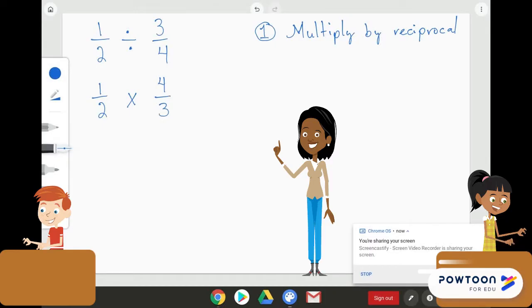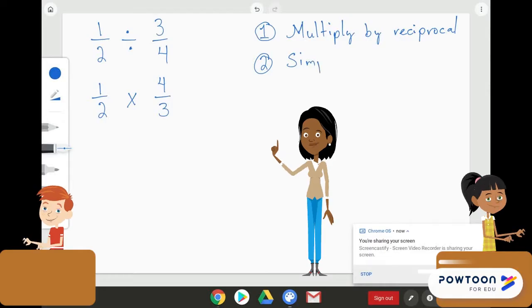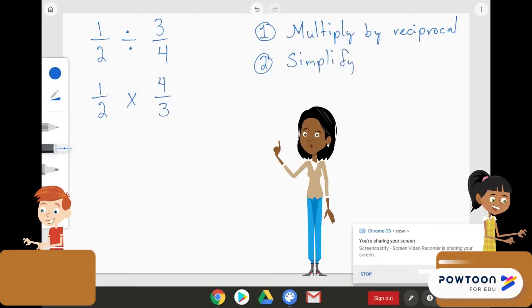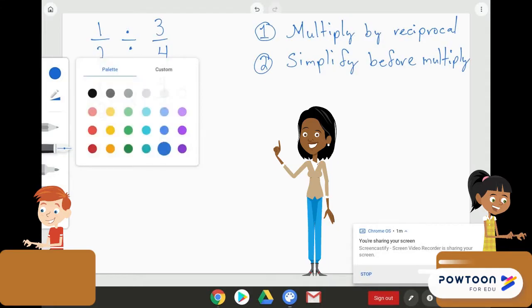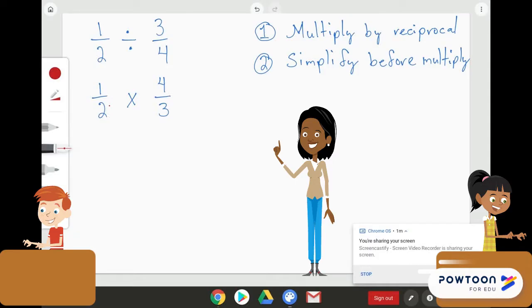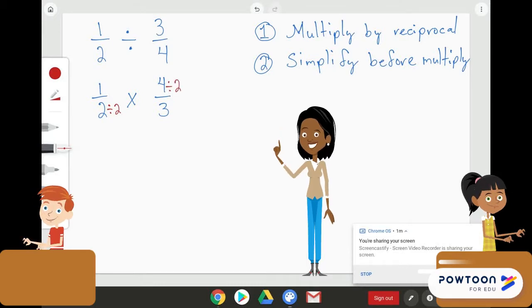The next step we're going to do here is to simplify before we multiply. And you may be wondering, how do we do that? Well, here's how. We're going to look in the numerator and denominator to see if there are any common factors. We can divide 2 by 2, just like we can divide 4 by 2.